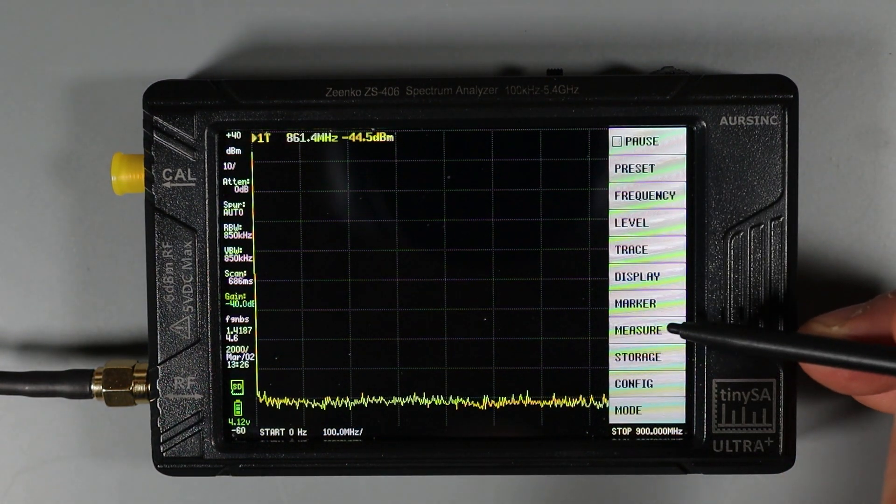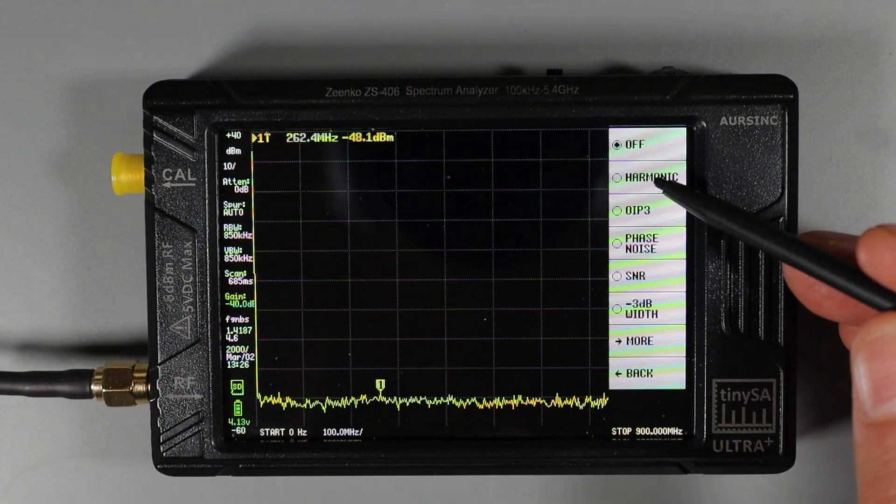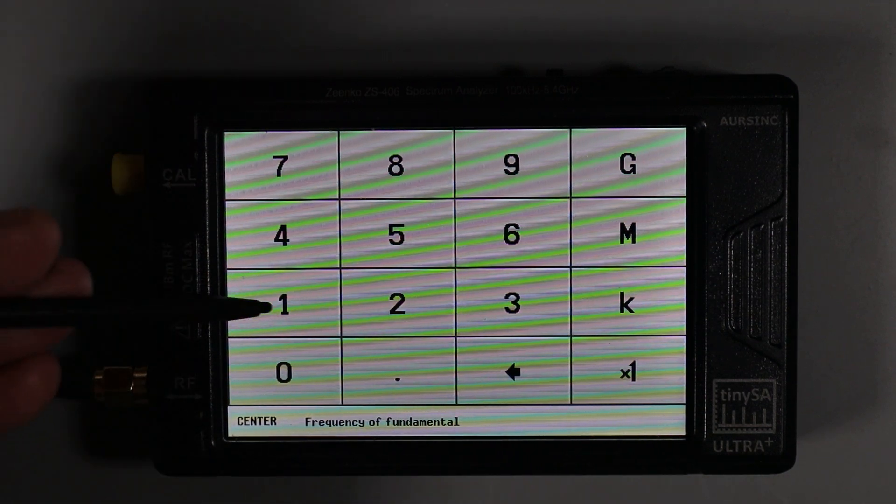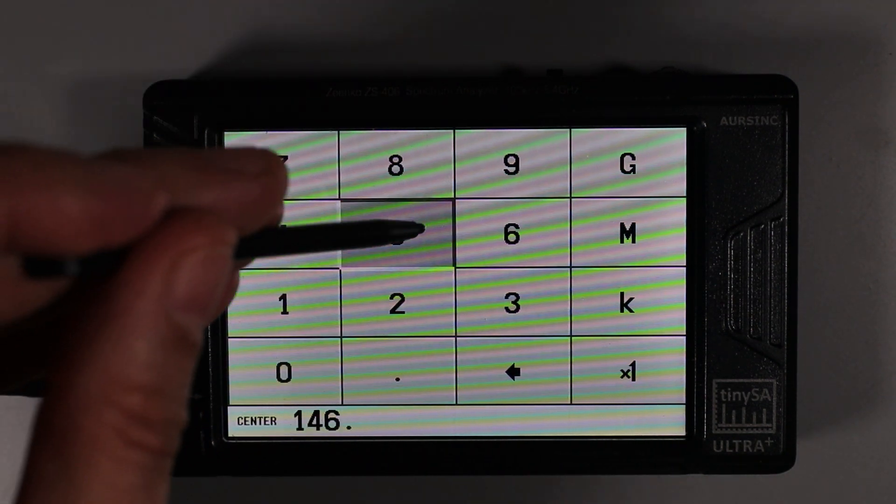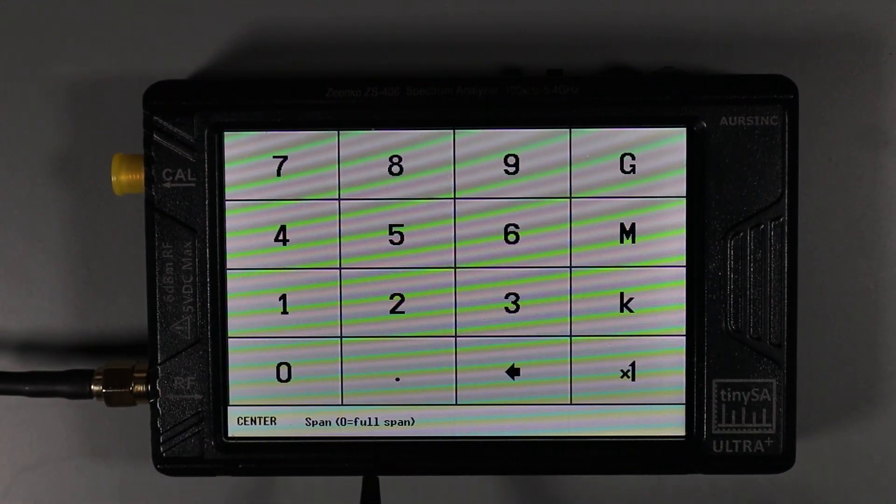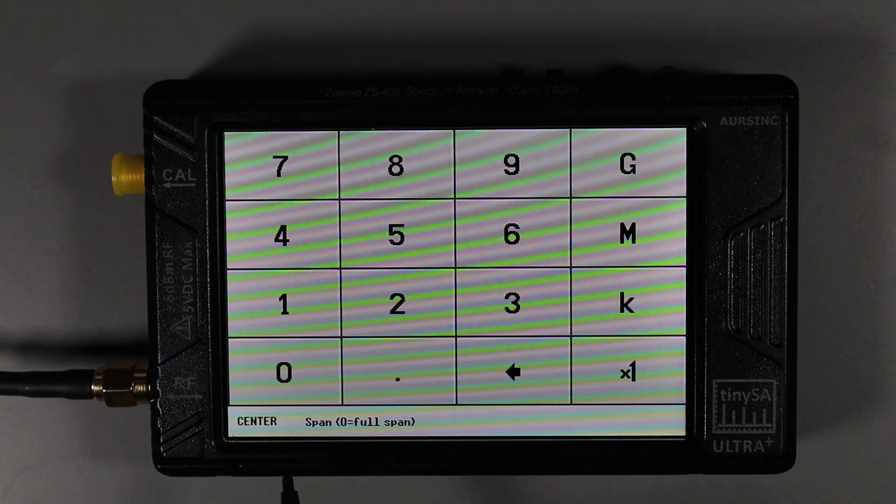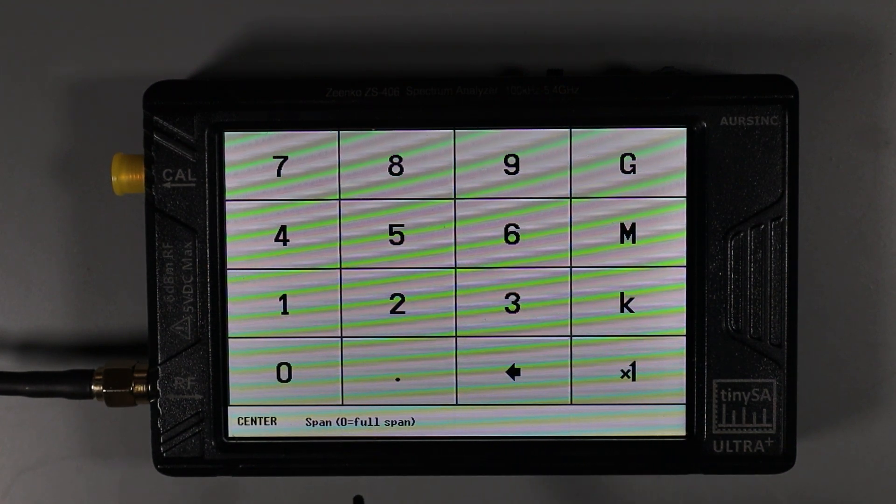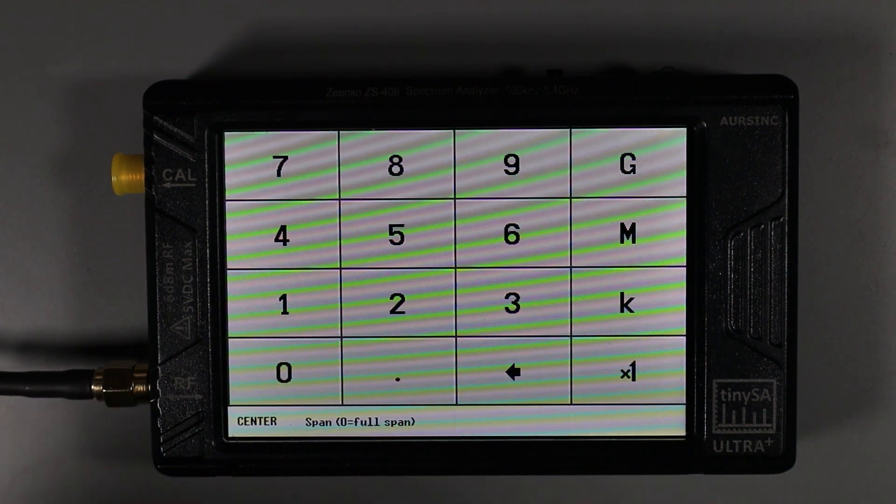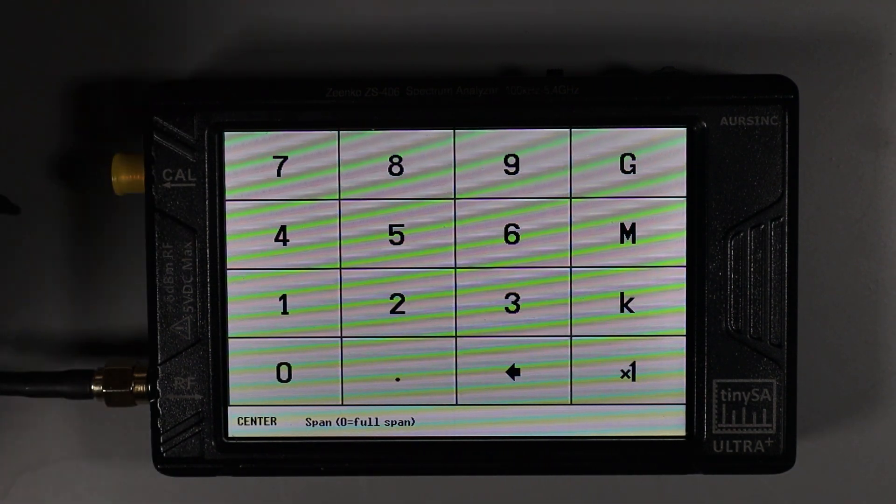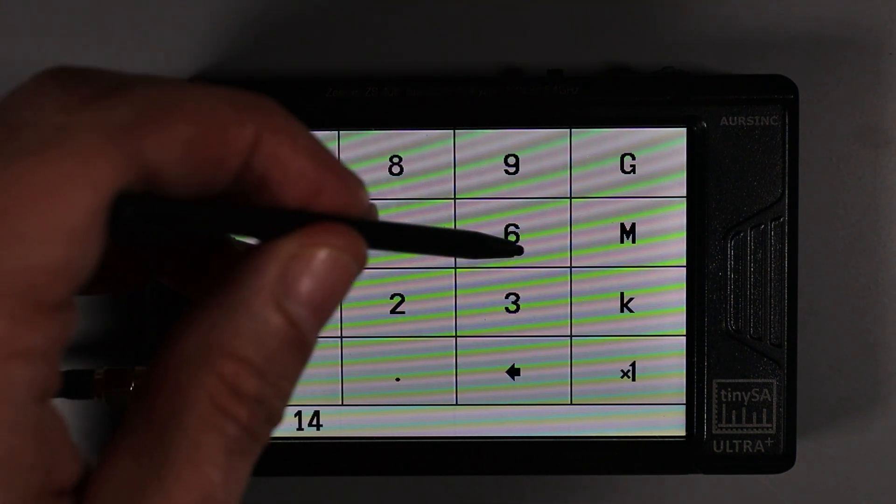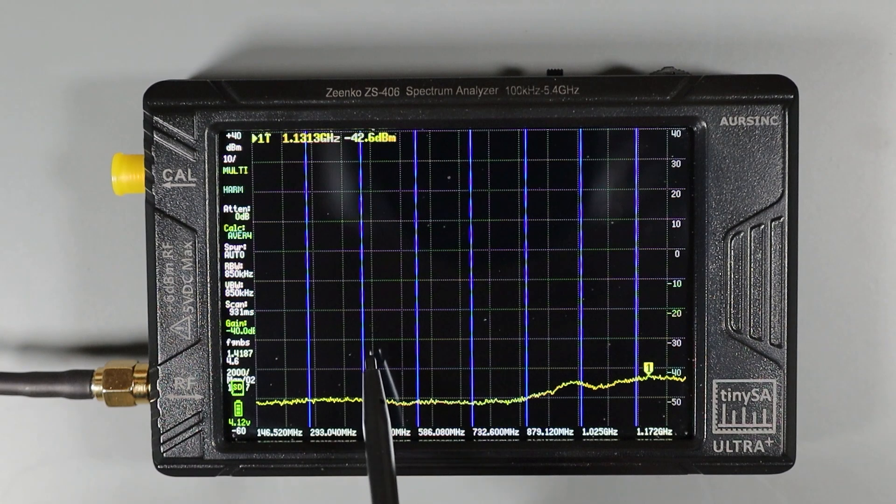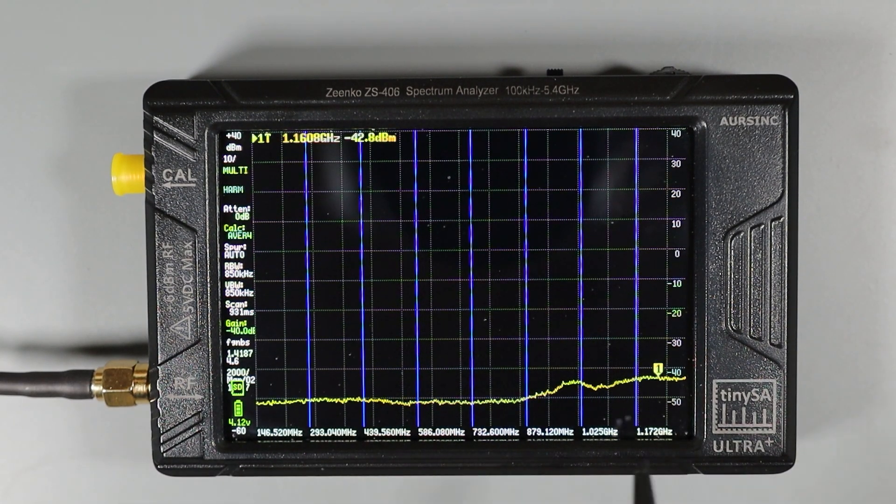So now we're ready to set up the harmonic test. I'm going to go into the main menu and choose measure. And then from there, I'm going to choose the harmonic option. We're first prompted to enter a center or fundamental frequency that we want to test. So in our case, it's going to be 146.520 megahertz. Now the next prompt is for a span frequency. If we enter zero, that'll just show us the whole spectrum without any dividing lines. But if we put in a frequency, we can see dividing lines on the screen that will help more easily identify the harmonics. Normally we want those dividing lines to be spaced the same distance as the fundamental frequency. So I want to enter in 146.520 megahertz.